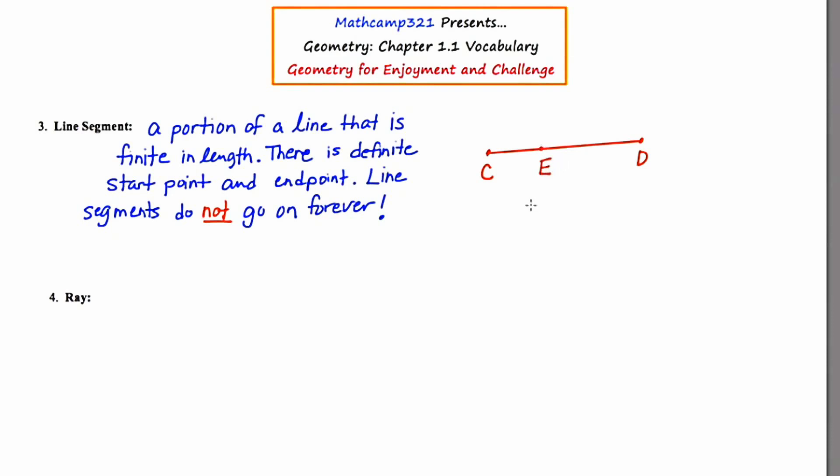Now to name a line segment, you use the two end points, but it doesn't matter the order that you say. So I could call this line segment CD with the special notation of the little bar on top, this time without the arrows. Again, the arrows would indicate that it's a line and that it goes on forever. But line segment CD represents the same set of points as line segment DC. So it doesn't matter whether I say the points from left to right or from right to left. It makes no difference. It represents the same points.